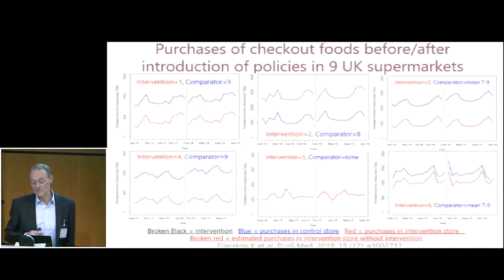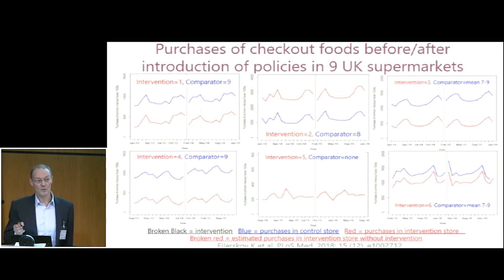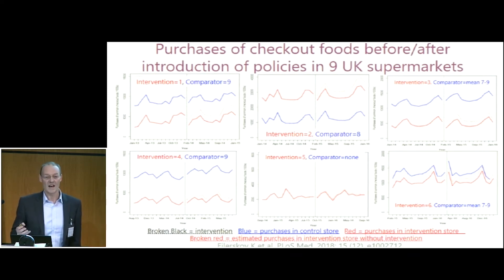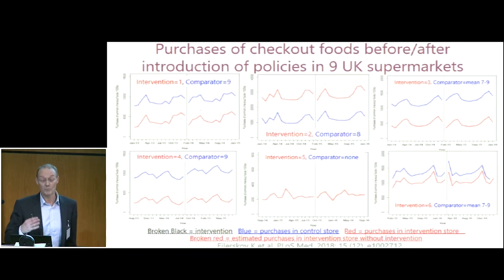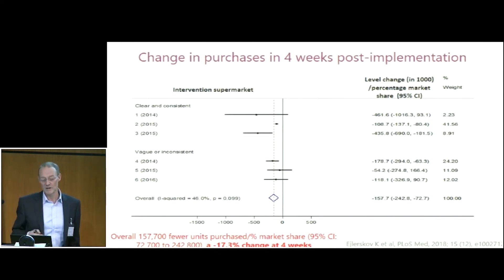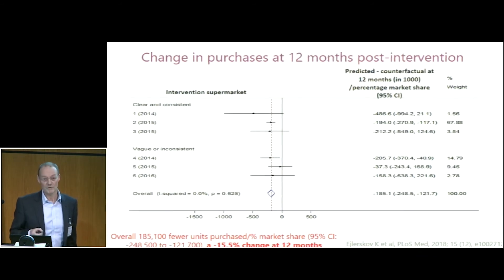These plots show the interrupted time series analysis. In blue is the comparator and in red is the intervention supermarket — the six supermarkets that introduced policies. We chose a comparator based on the best fit of the pre-intervention trend, then modelled the post-intervention trend shown as a dotted red line, and compared that expected trend to what was actually observed. In each case the observed was lower than the expected — measuring purchases of checkout foods. Putting all six together in a meta-analysis, we found a 17% reduction in sales of these foods at four weeks post-intervention and a 15% reduction at one year — quite a sustained effect, and in marketing terms a very large effect size.